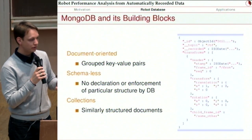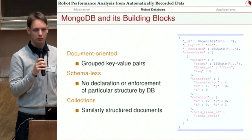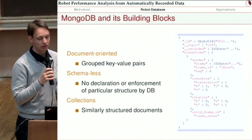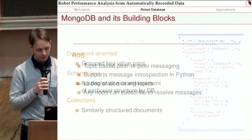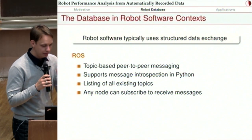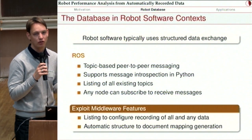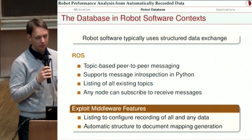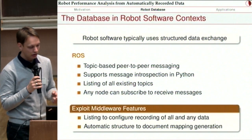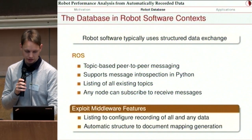The remedy for potential confusion is that we have collections. If you come from a relational database world, it's kind of a table but not a real table. Typically in one collection you store similarly structured documents. In terms of ROS, with topic-based peer-to-peer messaging and the ability to list all existing topics, you can easily exploit these middleware features to log any and all data without configuration. We only configure what we do not want to log — for example, images in both JPEG and RAW when we're only interested in one. This is how we meet the minimal-configuration criterion.